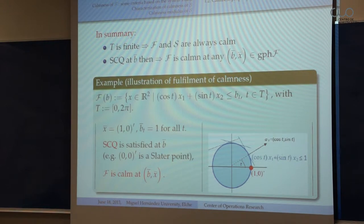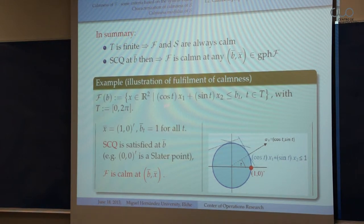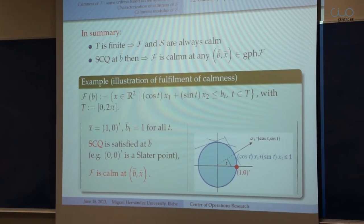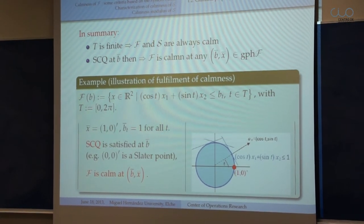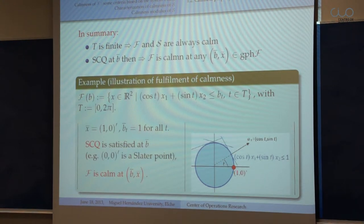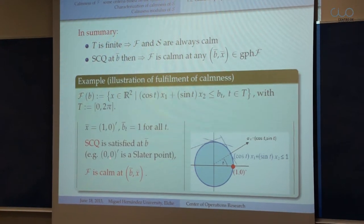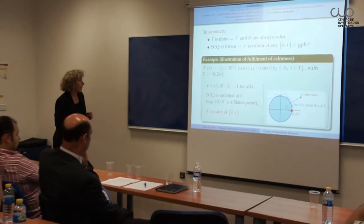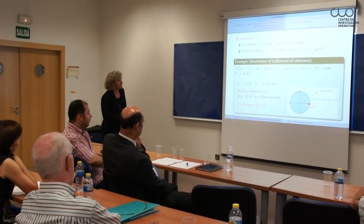We now present two illustrations. In the first, we have calmness. T is the interval [0, 2π], and for each index t we have the corresponding a_t on the left-hand side, with the blue line representing each half-line and the feasible set being the blue circle. With nominal element b̄ equal to the constant one, the origin (0,0) is a Slater point, so we have calmness for the feasible set mapping, in particular at the point (1,0).